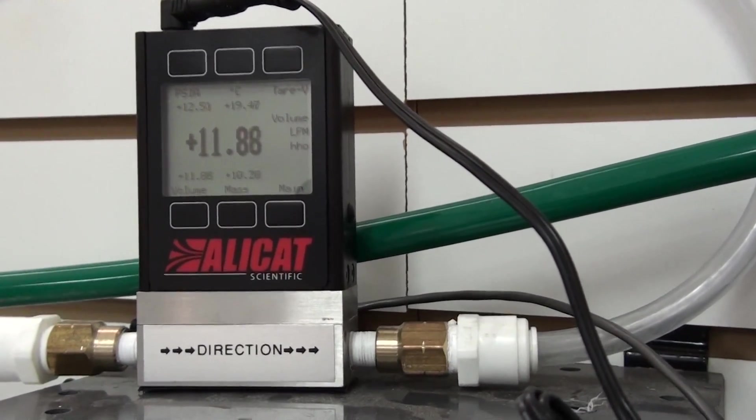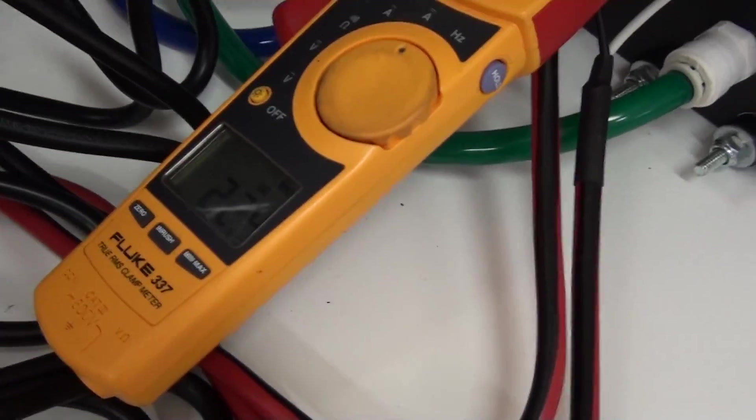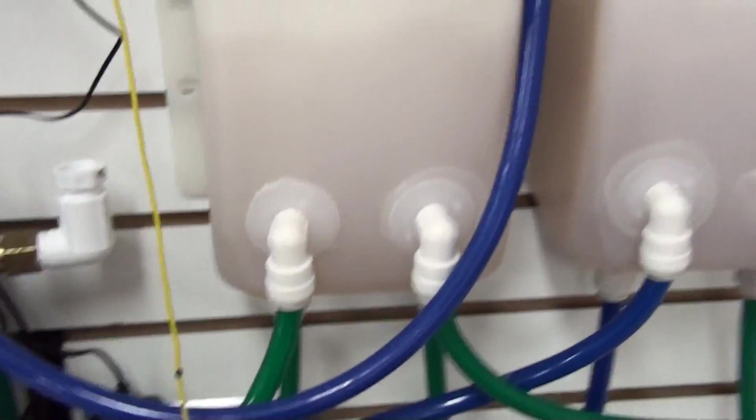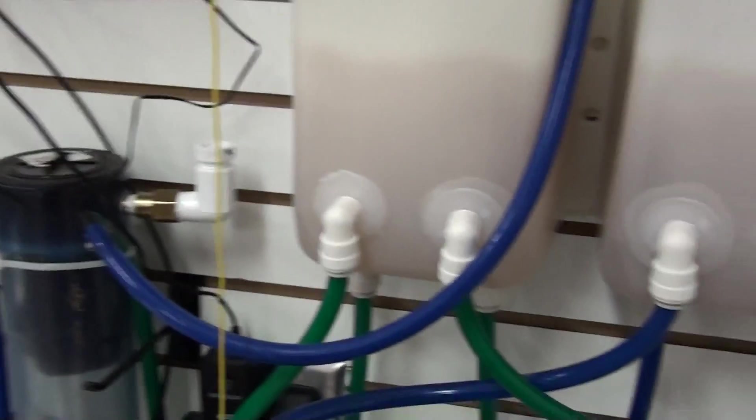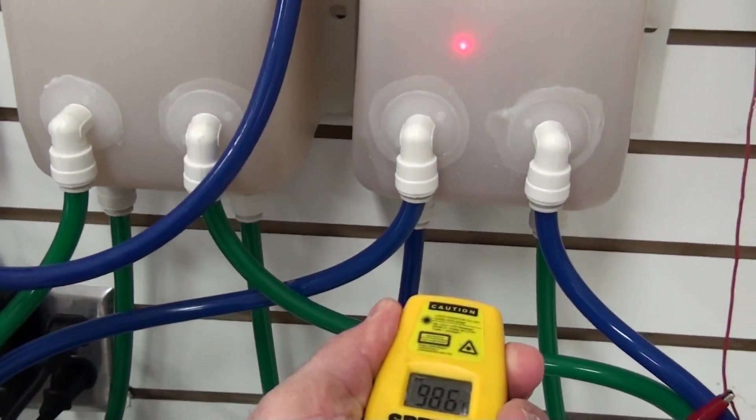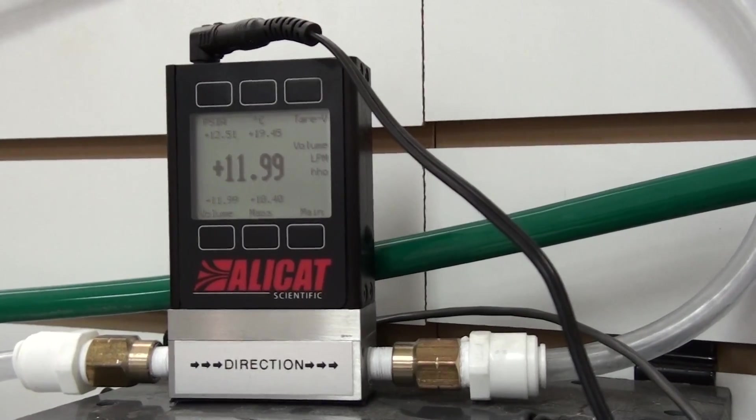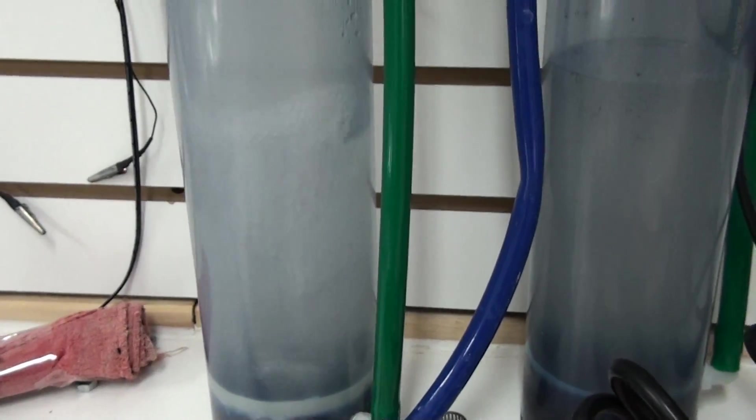And there you can see, it should hit 12 liters a minute, there we go, 12 liters a minute, 22 amps. So each side is doing 6 liters per minute. This is pretty much the max for this 118 plate cell. So that will show you what the cell is capable of. And that's what 12 liters a minute looks like going through the bubbler.